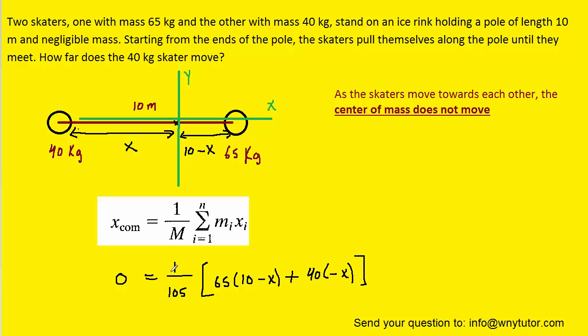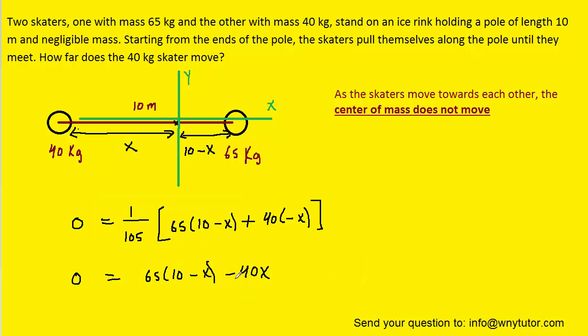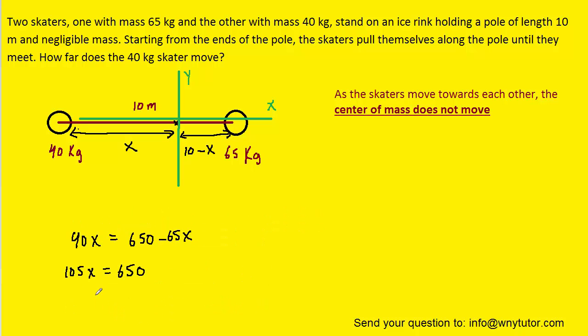We could multiply both sides of the equation by 105 in order to cancel out this 1 over 105. We could then add the 40x over to the left-hand side. And we could also distribute the 65. We'll then add 65x over to the left. And then when we divide by 105...